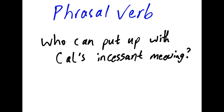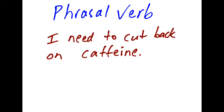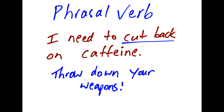There's also something called a phrasal verb, when a verb like 'put' is connected with another element, typically either an adverb or a preposition. These are idiomatic phrases like 'Who can put up with cow's incessant meowing?' or 'I need to cut back on caffeine,' or even 'Throw down your weapons.'